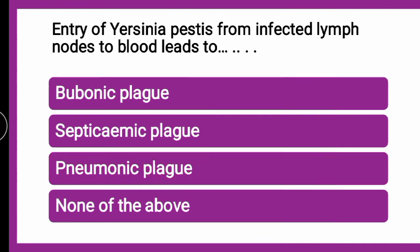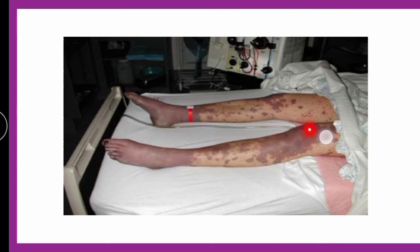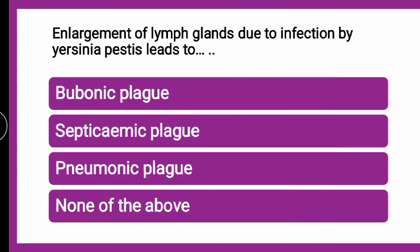The next question is: entry of Yersinia pestis from an infected lymph node to the blood vessel leads to which form of plague? When swellings occur at lymph nodes — called buboes — that is the bubonic form. When Yersinia pestis passes from those infected lymph nodes into the blood, this form converts to — bubonic, septicemic, pneumonic, or none of the above? The correct answer is septicemic plague, as the infection passes into the blood circulatory system.